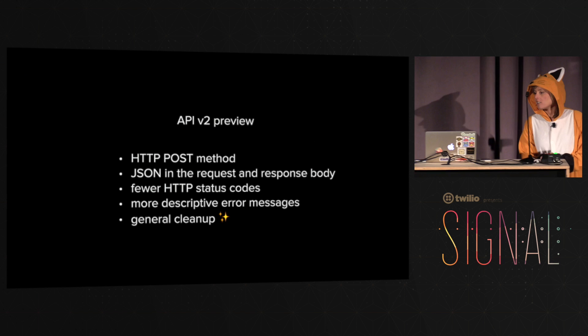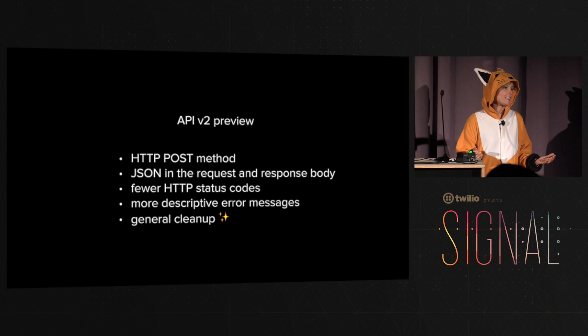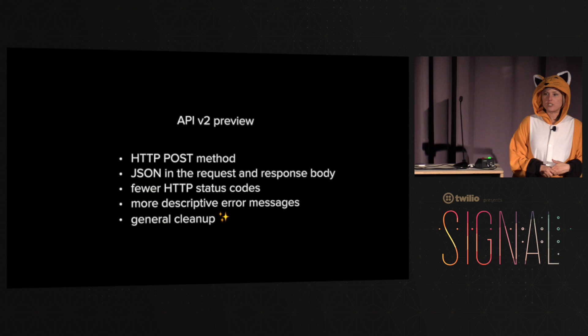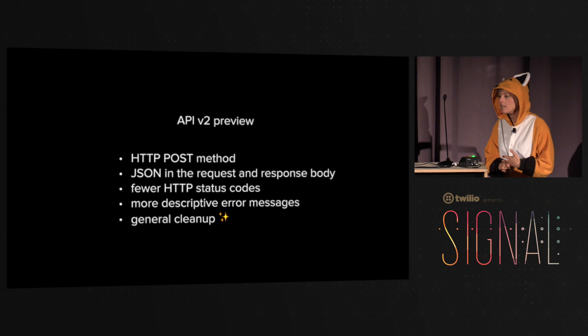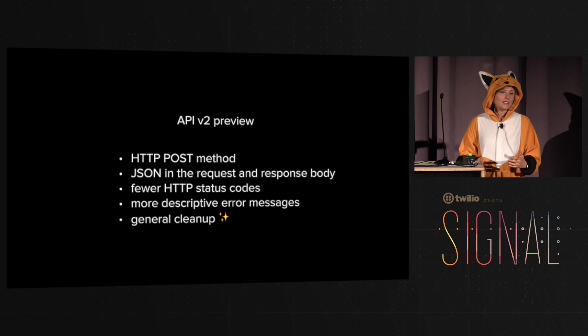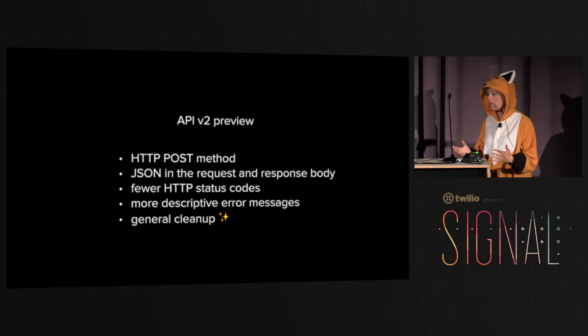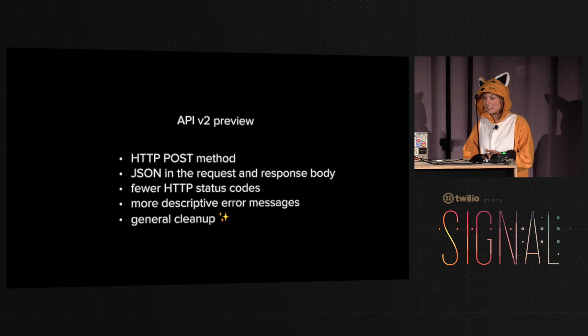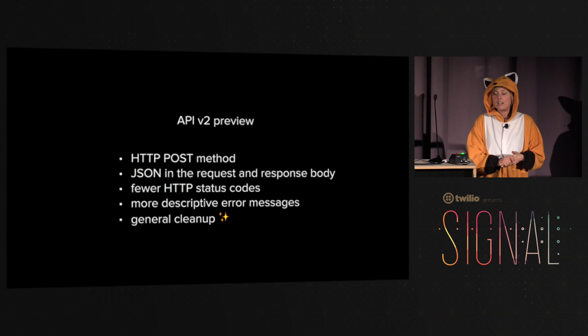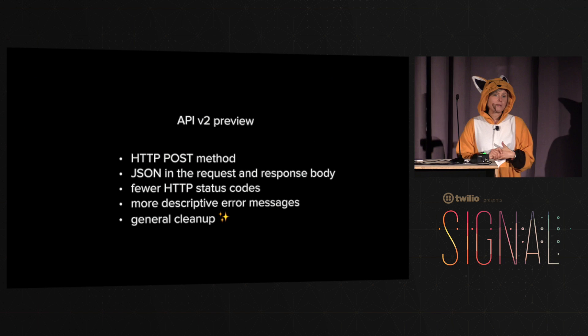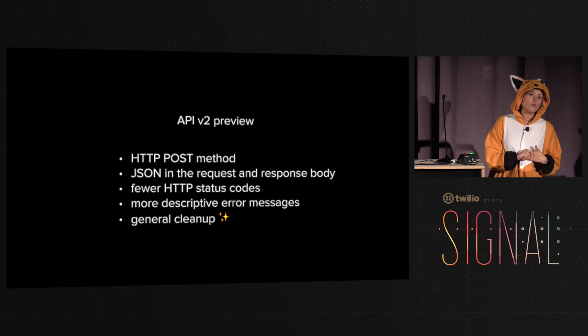API v2 is still sort of considered a preview in that we are talking with developers and opening up a conversation about what the next generation of Web APIs should really look like. We're trying some experimental things. For example, every request method is a POST — even in cases where you'd traditionally use HTTP GET. Also doing JSON for the request and response bodies, so no URL-encoded parameters and no form-encoded body. Fewer HTTP status codes, and instead having more descriptive human-readable error messages, plus some general cleanup.